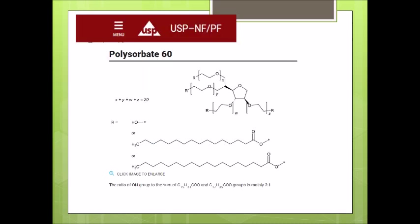Polysorbate 60 is a compendial excipient and there is a monograph of this chemical in USP. In the USP we have a description with the molecular structure of polysorbate 60 that talks about the amount of ethylene oxide being 20 moles.